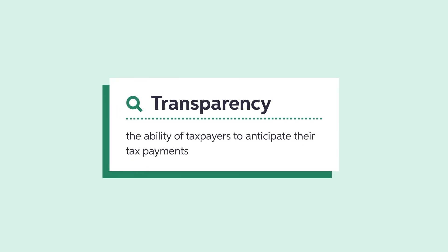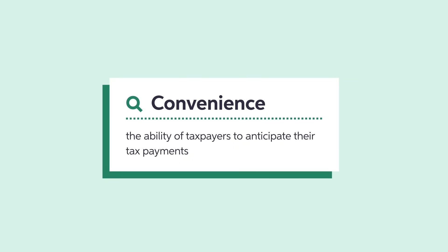A tax system is transparent if a taxpayer can predict what they will need to pay the government. In other words, taxes should not be volatile. And finally, taxes should be easy to pay.